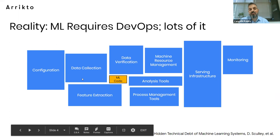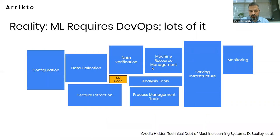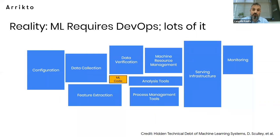People tend to think about an ML product or ML workflow as being concentrated around the ML code — around the model and training. But in reality, actually writing the code is a very small piece of having an ML workflow up and running. You need to configure, collect data, verify your data, manage hardware and software resources, extract features, process, serve, and handle production. All of these things are essentially DevOps and MLOps, and someone has to handle them. This is where Kubeflow comes into the picture.